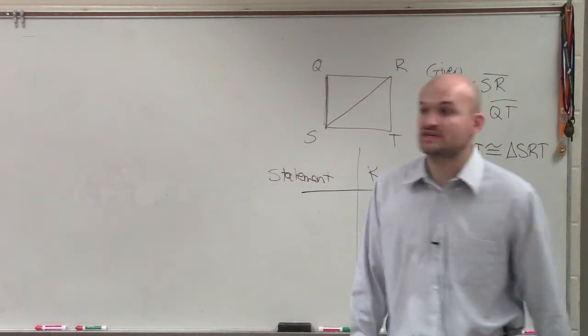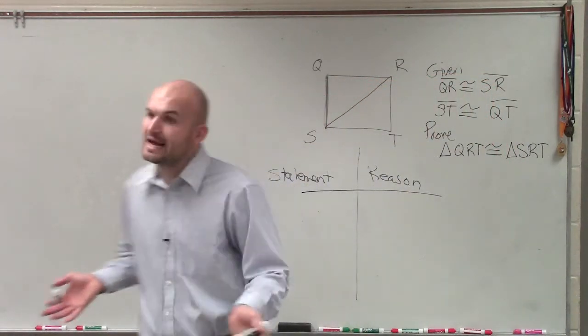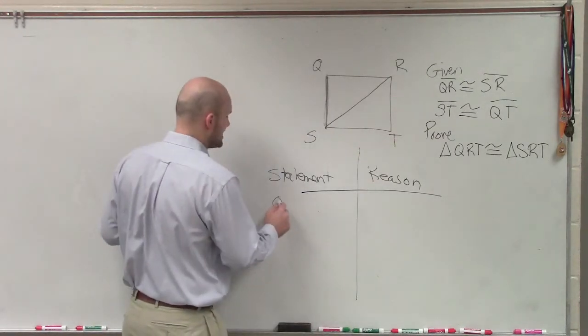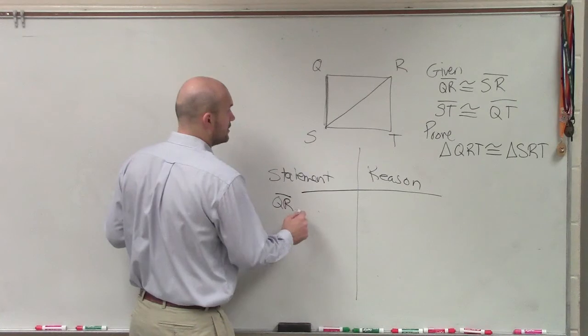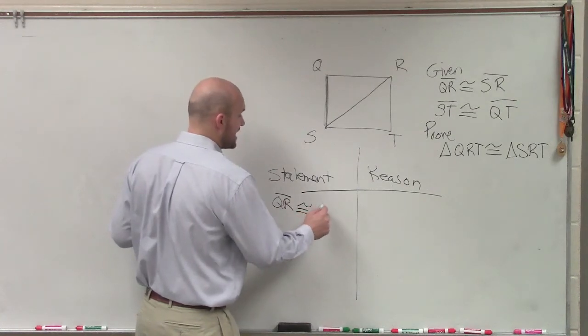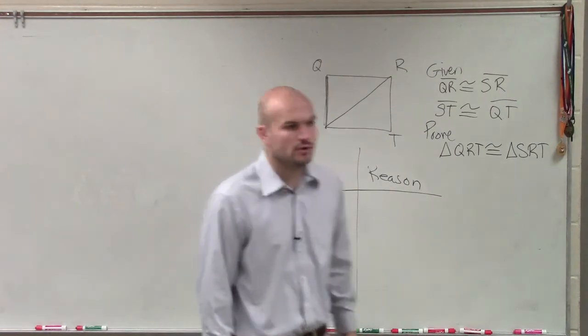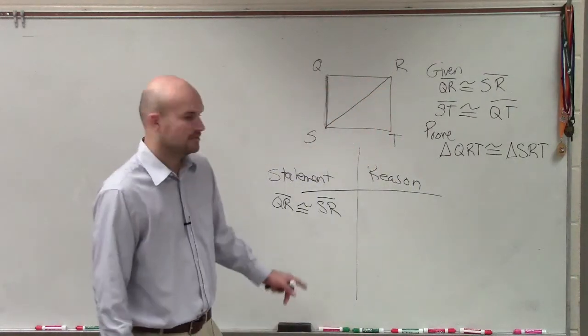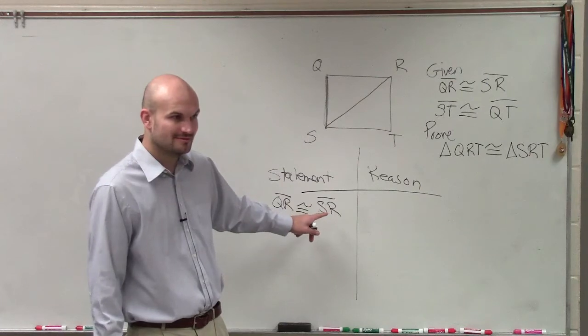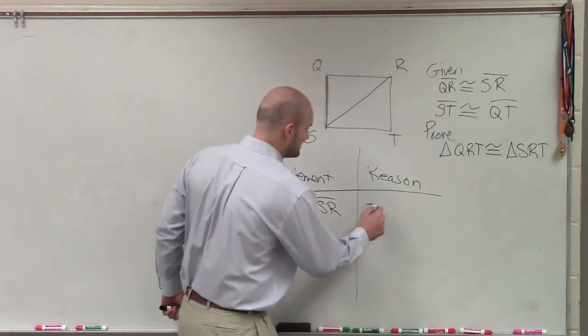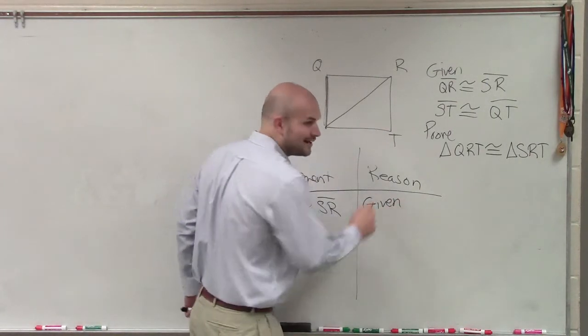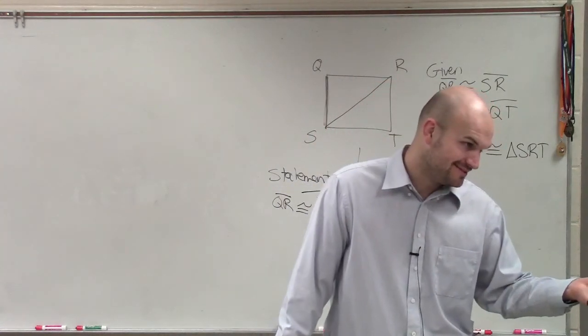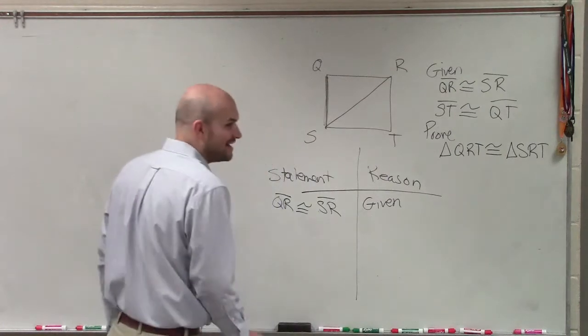So the first thing we can do is we know we're going to have to have a statement and a reason. So I write statement, and then I write reason. Now, the next thing we need to do is we write down what we have been provided. So we say side QR is congruent to side SR. Now, why do we know that is true? Because it's given, right? Now, I know you don't like proofs, but was that too bad? No, it wasn't that bad.